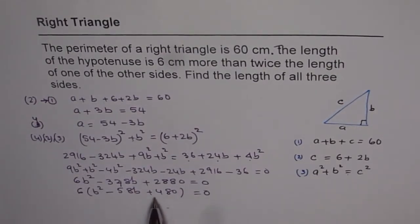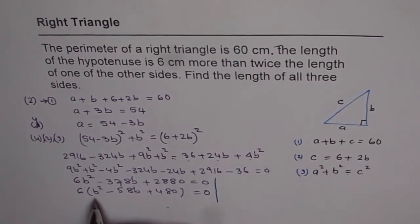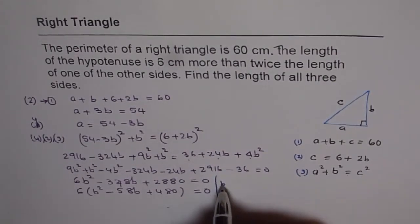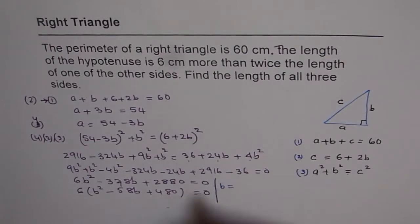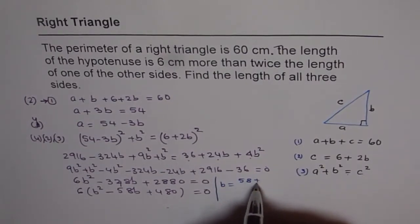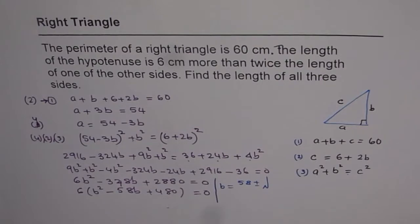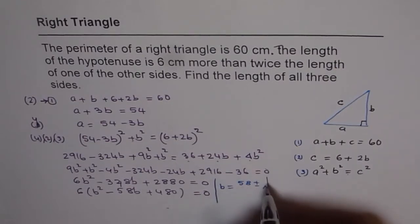We can factor this or use quadratic formula to get the answer. Let's use quadratic formula. The quadratic formula will give us b equals minus 58 plus or minus square root of 58 square minus 4 times 1 times 480.